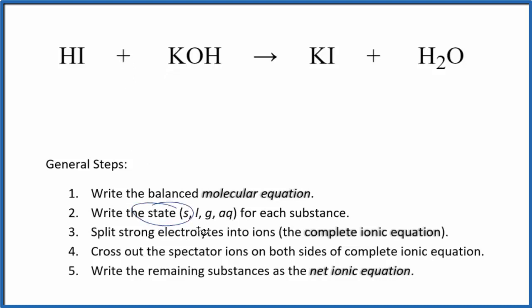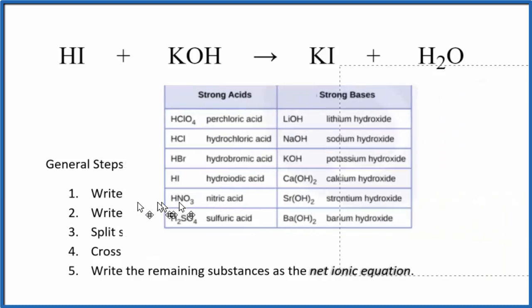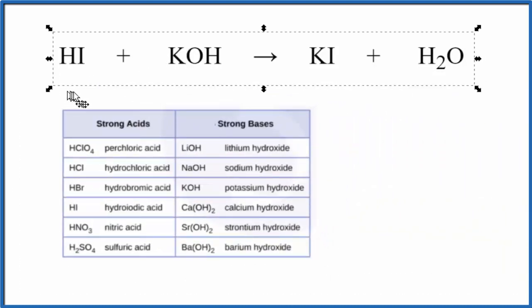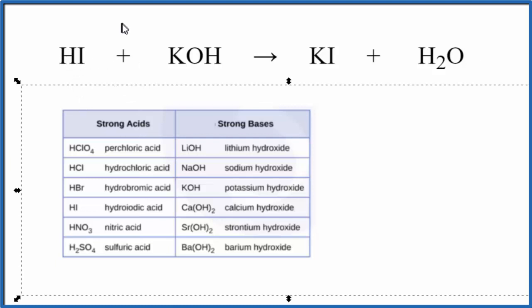Next, we need to write the states for each substance. It's helpful to memorize this table of common strong acids and bases. We have an acid here with the H in front, and then we have a metal bonded to a hydroxide. That's a base.